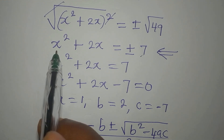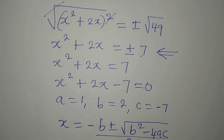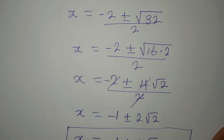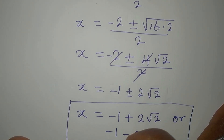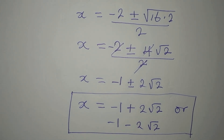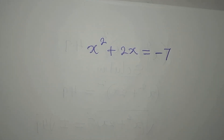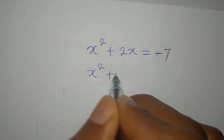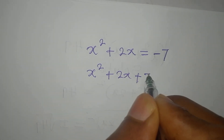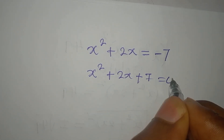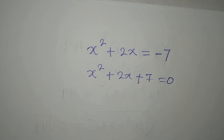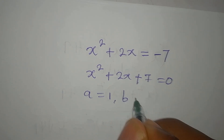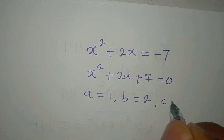We have picked the positive case; we will now go back to pick the negative. Our equation now will be x squared plus 2x equals minus 7. Rearranging, we get x squared plus 2x plus 7 equals 0. We will still use our formula: a remains 1, b is 2, and c is 7 — not negative 7 like before.